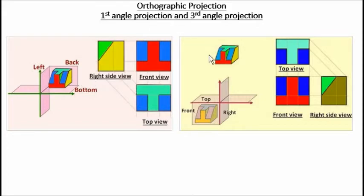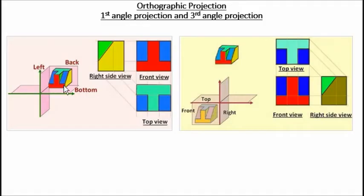There are two types of orthographic projection — you can draw a part in first angle projection or third angle projection. The key is knowing the four quadrants: one, two, three, four. If you draw the front view in quadrant one, it's called first angle. The quadrants are first, second, third, fourth. If you draw the front in the first quadrant, it is first angle; if you draw the front in the third, it is third angle. There is no second or fourth angle projection.